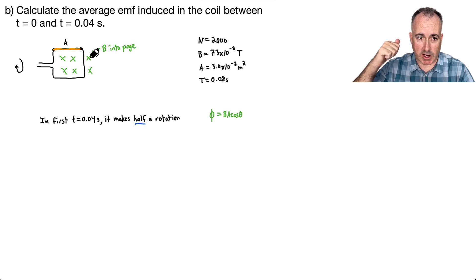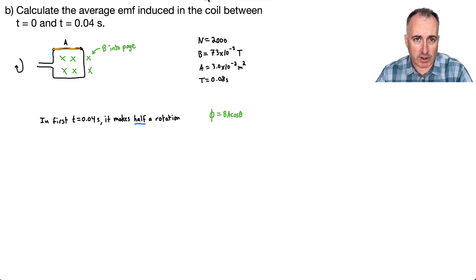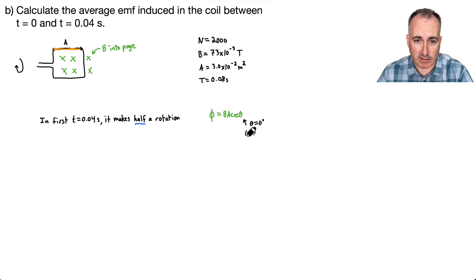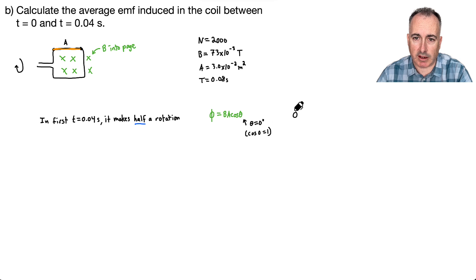Magnetic flux — the equation is phi equals B·A·cos(θ), where θ is the angle between the normal of the surface, which is straight up and down in this case, and the magnetic field, which is also straight up and down. That means θ is 0, and cosine of 0 is just 1. So I can rewrite the equation: phi equals just B times A.